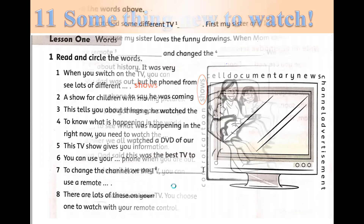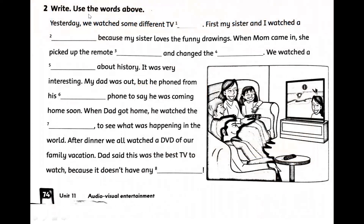Và phần bài tập số 2: Write — use the words above. Các bạn viết cái đoạn văn này và điền từ vào. Đó cũng là những từ mà chúng ta đã học. Cái bài này nội dung là chúng ta ôn lại từ và sử dụng từ như thế nào. Ví dụ: Yesterday, we watched some different TV shows. Vậy thì các bạn đọc và điền những từ tiếp theo nha.